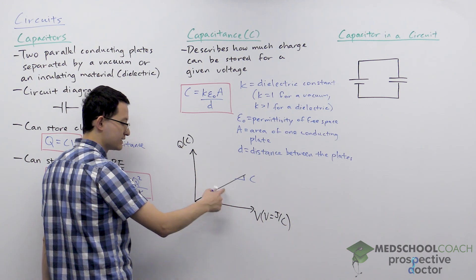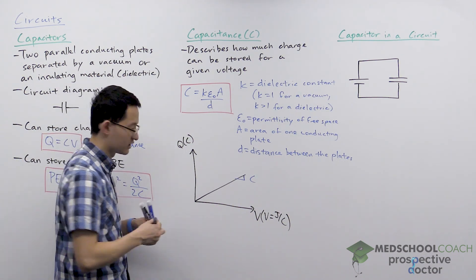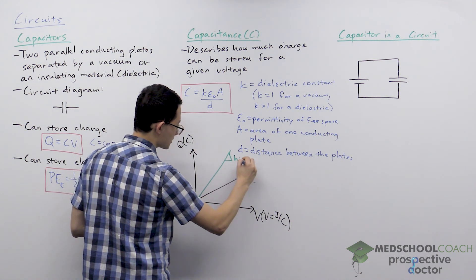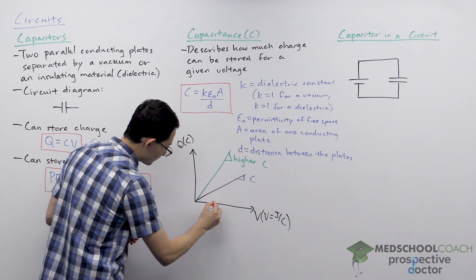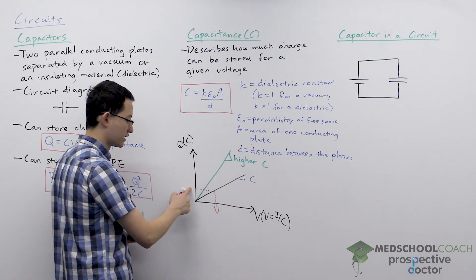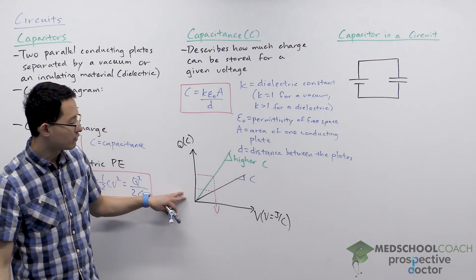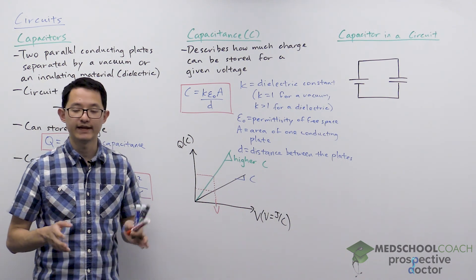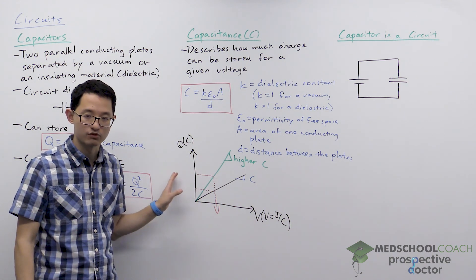From the graph you can say: if my voltage is this value, this is how much charge I can store. To better understand this, we can draw the line for another capacitor with a higher capacitance — it has a greater slope, meaning higher capacitance. For one particular voltage value, you can see that the capacitor with higher capacitance can store more charge for the same voltage. Capacitance is a measure of how much charge can be stored for a given voltage; the greater the capacitance, the more charge that can be stored.